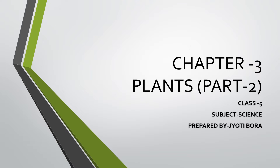Hello children, welcome back. Today we will discuss the second part of Chapter 3, Plants. In the previous section, we discussed parts of a plant and different plants based on their structure like herbs, shrubs, climbers, creepers, and trees. We also studied roots and their importance, stem and its importance, leaves, and the process of photosynthesis which takes place in leaves. Today we will discuss about flowers and seeds. So let's get started.